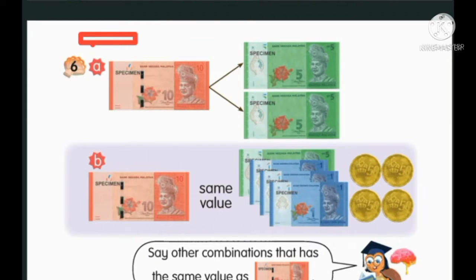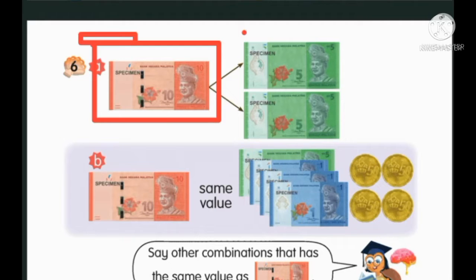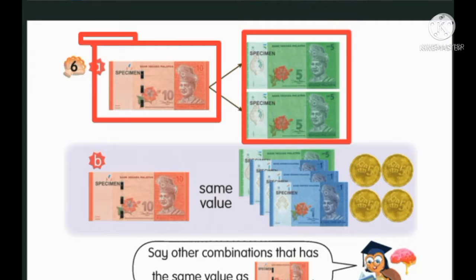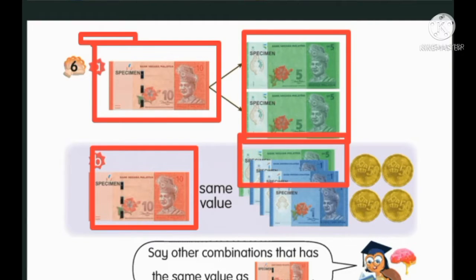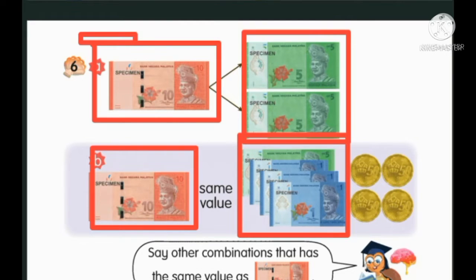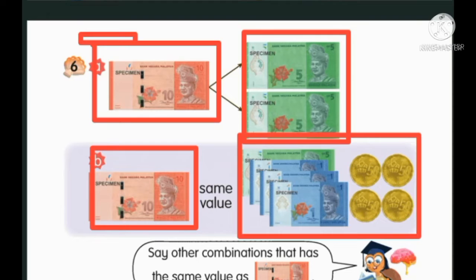This is the combination for 10 ringgit. We have 5 ringgit and another 5 ringgit equal to 10 ringgit. Here, 10 ringgit. Here we have 5 ringgit, 6 ringgit, 7 ringgit, 8 ringgit, then we have 9 ringgit and 10 ringgit.